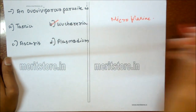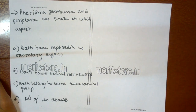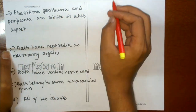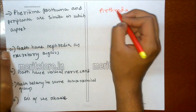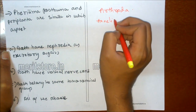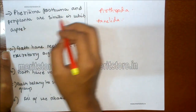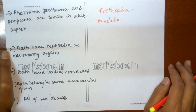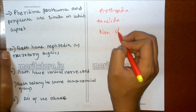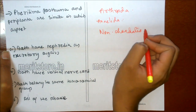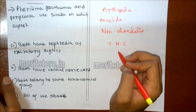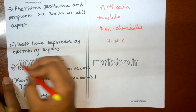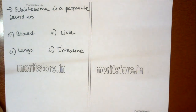Pheretima posthuma and Periplaneta are similar in which aspect? Pheretima belongs to phylum Annelida and Periplaneta americana belongs to Arthropoda. Both are non-chordates, and non-chordates have a ventral nerve cord. There is no complete spinal cord, but a double ventral nerve cord is present in various segments. So option B is the correct answer.